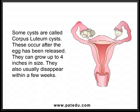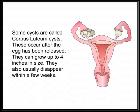Some cysts are called corpus luteum cysts. These occur after the egg has been released and can grow up to four inches in size. They also usually disappear within a few weeks.